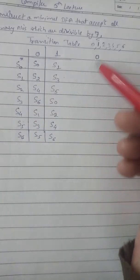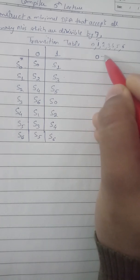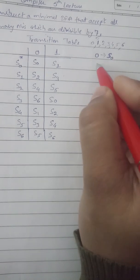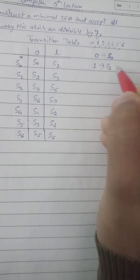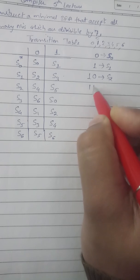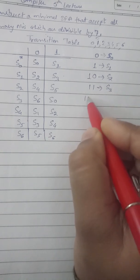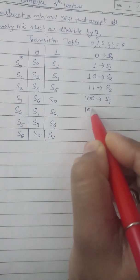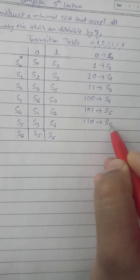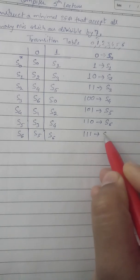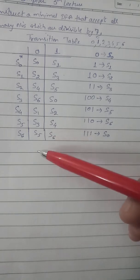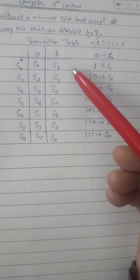To understand it more clearly: if we have 0, it stays on s0, which is also the final state. If we get remainder 1 it goes to s1; binary '10' (which is 2) goes to s2; '11' (3) goes to s3; '100' (4) goes to s4; '101' (5) goes to s5; '110' (6) goes to s6; and whenever we get 7 or a multiple of 7 we always return to s0. We can construct the diagram with the help of this transition table.